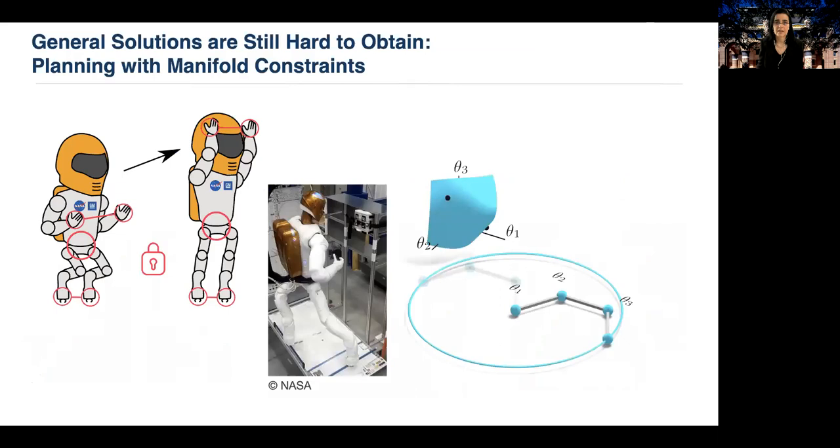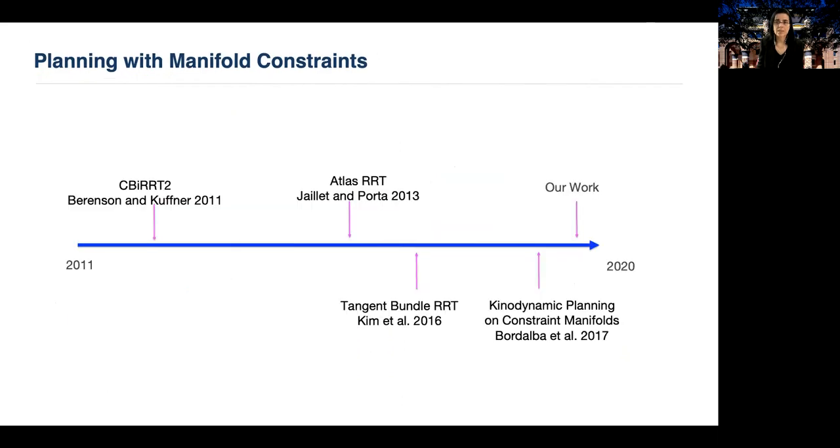Let me now discuss the case of planning with manifold constraints. In general, obtaining general solutions for cases where manifold constraints are present is hard. An example of such a constraint is given in this figure. The tip of the robot needs to be on the blue ellipse drawn on this slide. Or consider NASA's Robonaut, shown in this slide. NASA built this robot to assist astronauts in space. I will often refer to this robot as R2. Consider the case where the robot needs to keep the distance between its hands fixed because it is transporting a box in zero gravity.